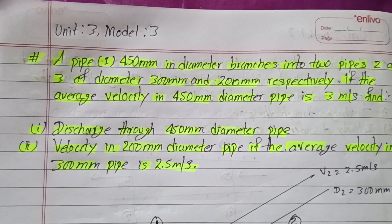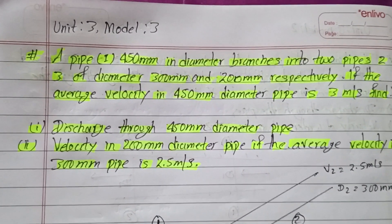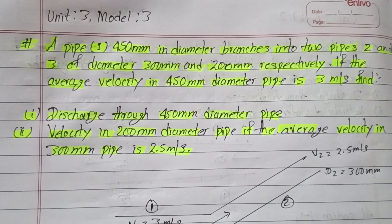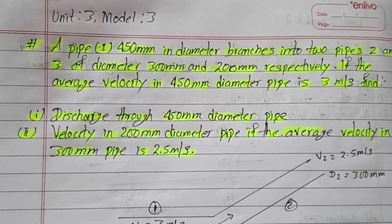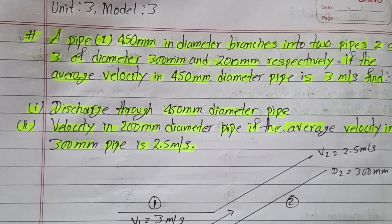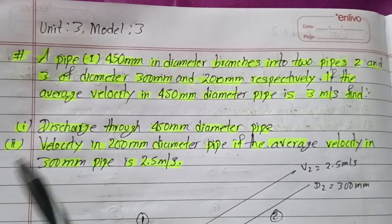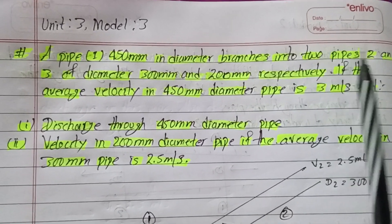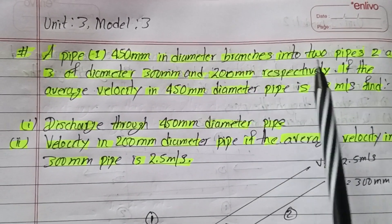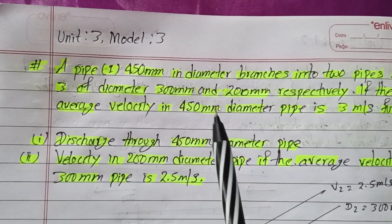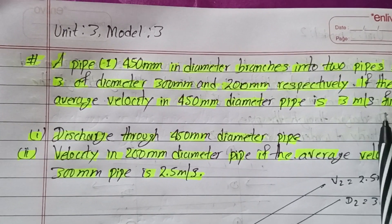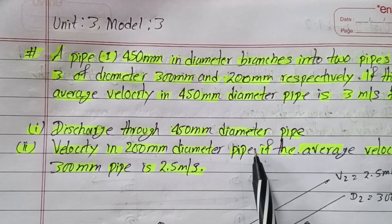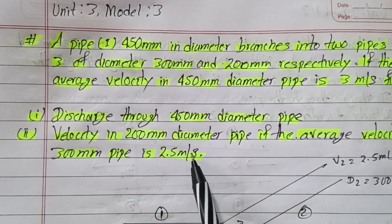Now we will take model number 3 question. Pipe 1 is 450 mm in diameter and branches into 2 pipes: Pipe 2 and Pipe 3, of diameter 300 mm and 200 mm respectively. If the average velocity in the 450 mm diameter pipe is 3 meters per second, find the discharge through the 450 mm diameter pipe and the velocity in the 200 mm diameter pipe, given that the average velocity in the 300 mm pipe is 2.5 meters per second.